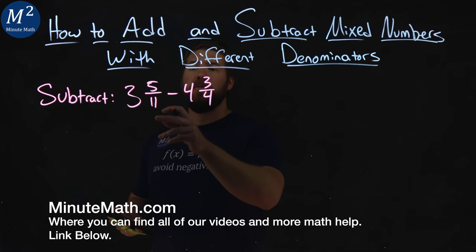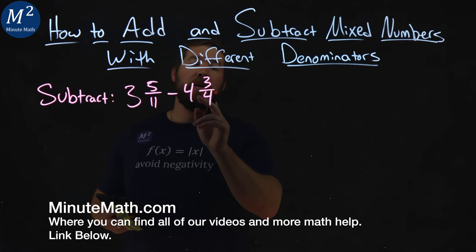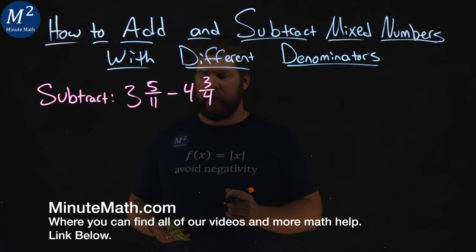We're given this problem here. Subtract 3 and 5 elevenths minus 4 and 3 fourths.